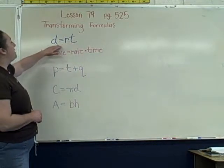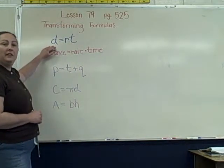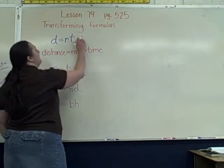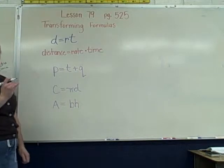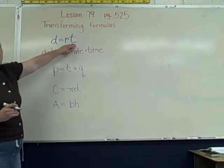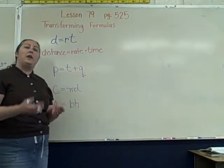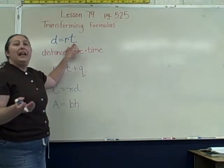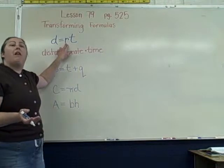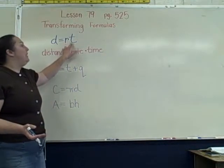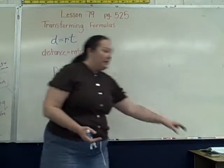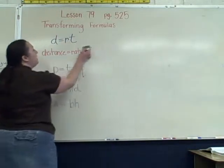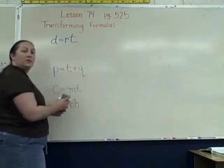But what if we wanted to find the time? We would want to get t by itself, which is what we're going to do in today's lesson. We're going to transform this equation so that it looks different. Looking at distance equals rate times time, to get time by itself, I have to recognize the operation happening between the variable I want to isolate and the other variable — r in this case.